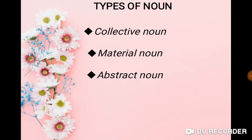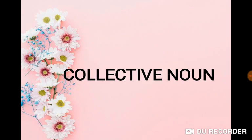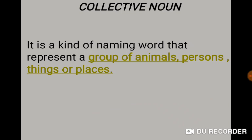First of all, we are going to see about collective noun. What is a collective noun? It is a kind of naming word that represents a group of animals, group of persons, group of things, or group of places. So, everything should be in a group — collective means it is a group. Say with me, children: group of animals, persons, things, or places.